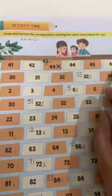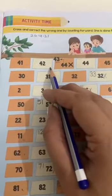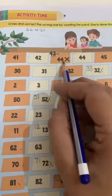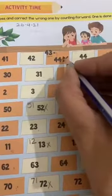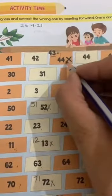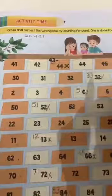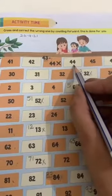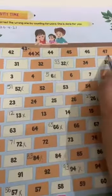In the first line, just look. 41, 42, and here it is written 44. So, this is wrong. Make a cross and write the correct number above it. Then it is 44, 45, 46 and 47.